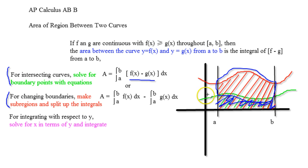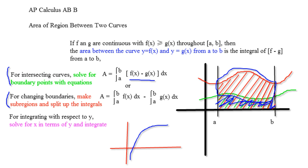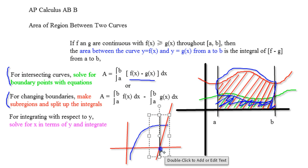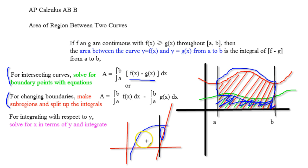In other words, if you're doing the integral and part of it has one boundary with the x-axis, and then all of a sudden you have another function coming up — for example, if we had something that looks like this, and right about here we had another region — for this first portion I would do the area between two curves, but for this second portion I would just do the integral of the first function, the blue function, from this part to this part.